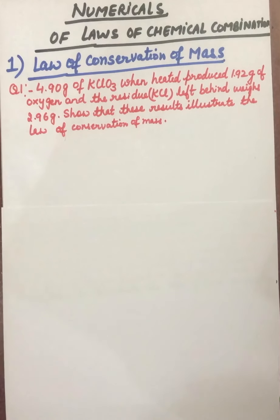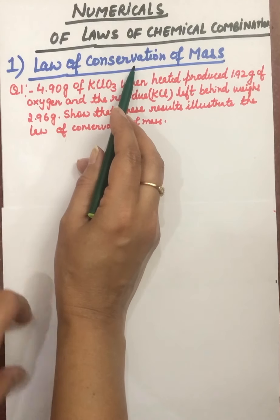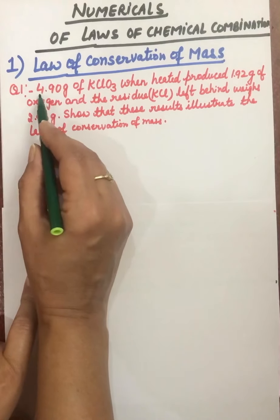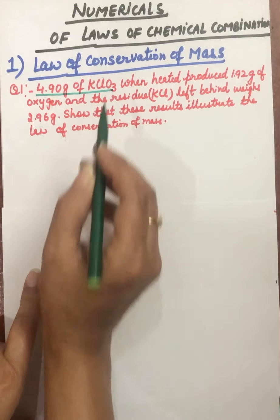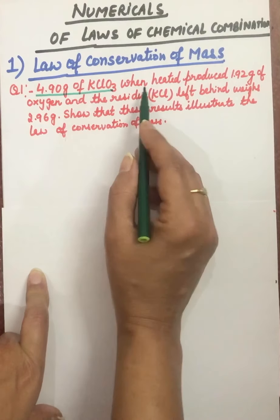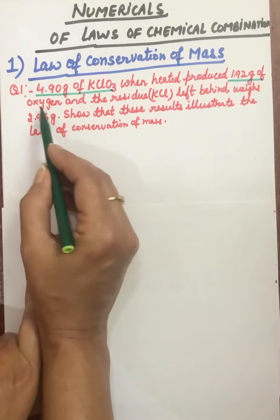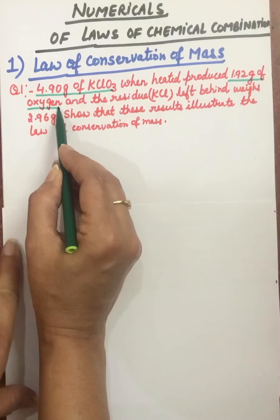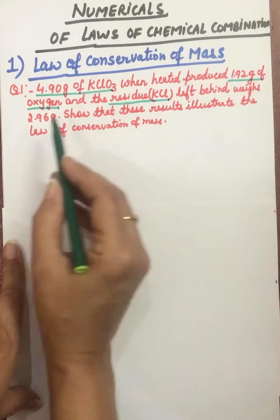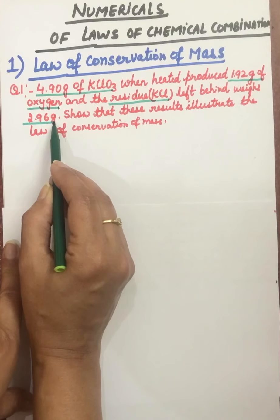Last class we did the laws of chemical combinations. Today we are doing the numericals based on these laws. The first law is the law of conservation of mass. The question is: if we take 4.90 gram of KClO₃ (potassium chlorate) and heat it, it will give 1.92 gram of oxygen, and along with this there will be a residue KCl weighing 2.96 gram.